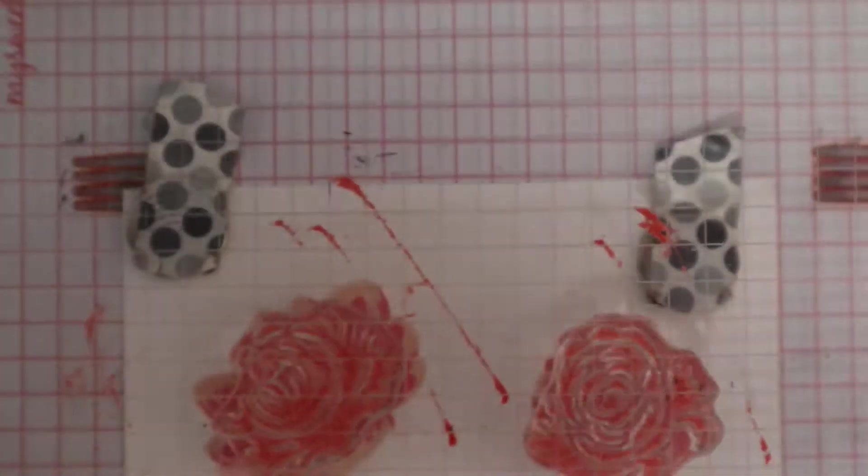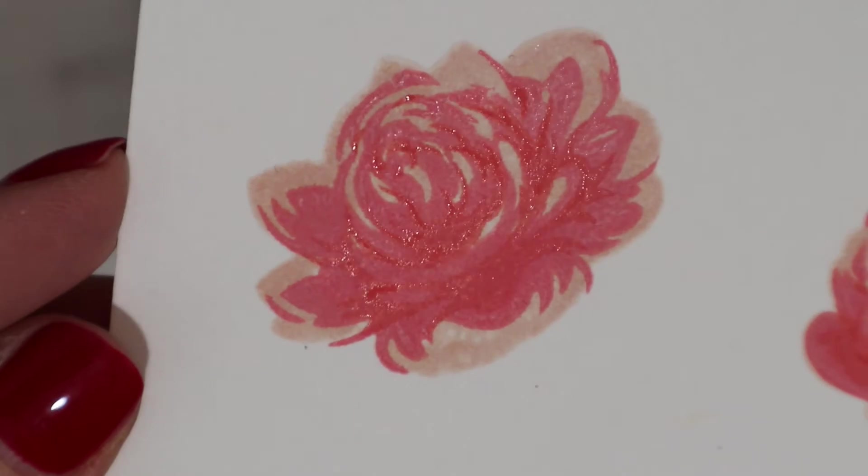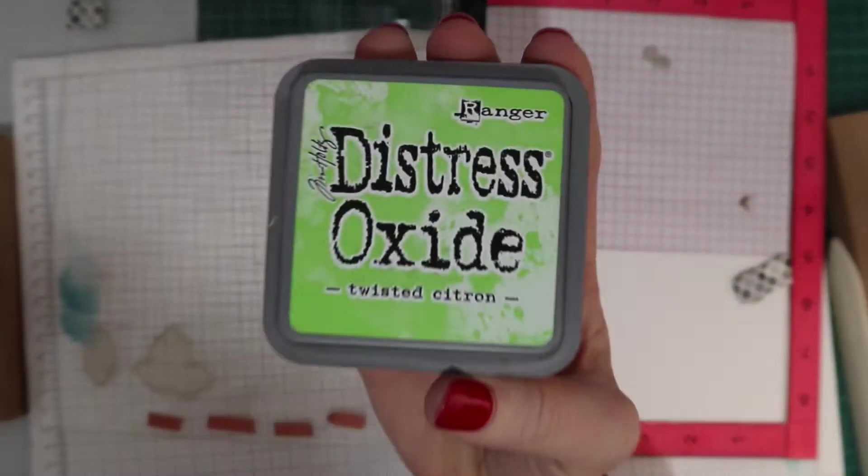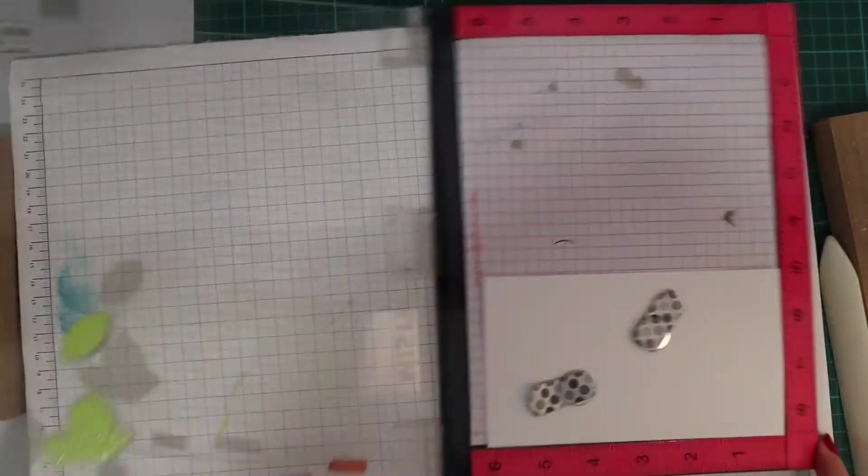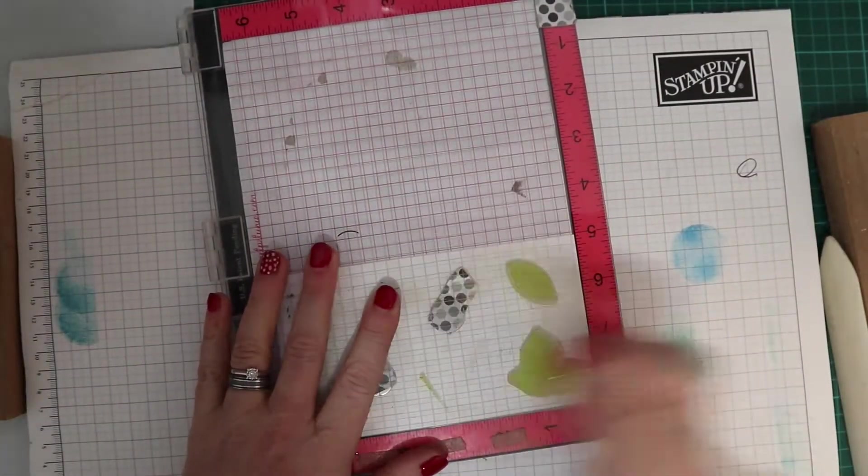You can see the difference in definition, and then this final one is abandoned coral. You then have the three different colors and it's just stunning. It's stunning images that look incredibly colored with very minimal effort.